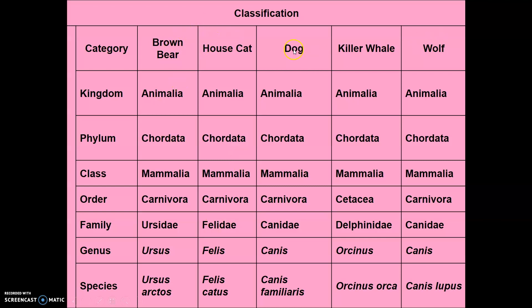So for classification, we have some animals up here. Notice they're all in the animal kingdom. Later in the week, we'll learn specifically about the phylum Chordata — that means they have a vertebrae, they have a backbone. They're all in the same class; we can see they're all mammals. Then it starts to branch off — they're all carnivores except for the killer whale. At the family level, they go into different families except for the dog and wolf, which are more in the canine. They actually have the same genus and then different species, so the dog and wolf would be the most closely related.